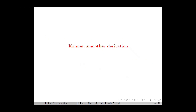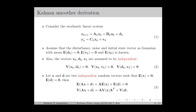Next, we move on to the derivation of the Kalman Smoother. We consider the stochastic linear time-varying system defined by equation 1, in which Ak, Bk, and Ck are the system matrix, input matrix, and output matrix respectively. We assume that the disturbance dk, the noise vk, and the initial state x0 are Gaussian random vectors, with E[dk] and E[vk] equal to 0, and E[x0] can be non-zero and is assumed to be known. Also, the vectors xk, dk, and vk are assumed to be independent, which means the corresponding cross-covariance matrices will be 0.